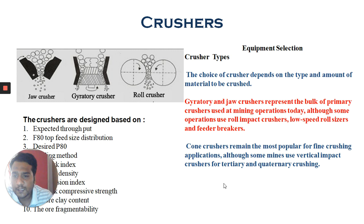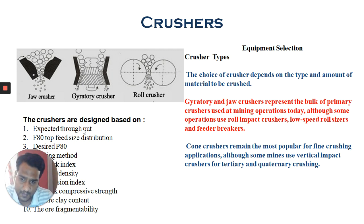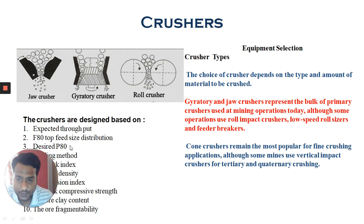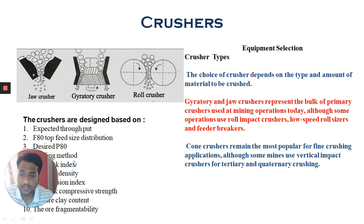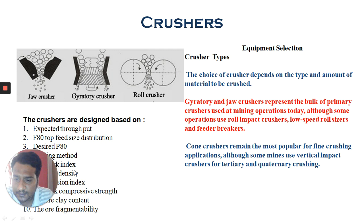Crushing equipment is designed on the basis of expected throughput. The design features of any crushing plant are based on the expected throughput — what the plant needs. The prime importance lies in the feed size distributions: what is the top size of the ore being fed to the crushers, the desired product size, and the type of crushing methods and material properties such as bulk density.